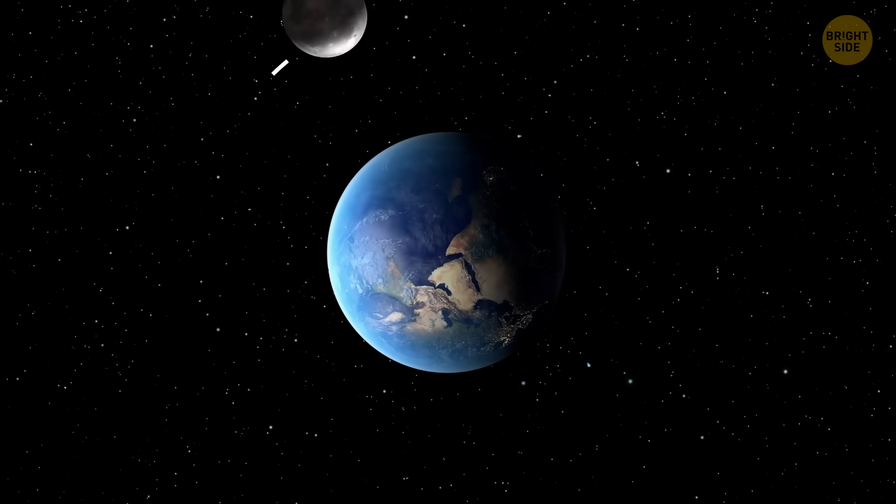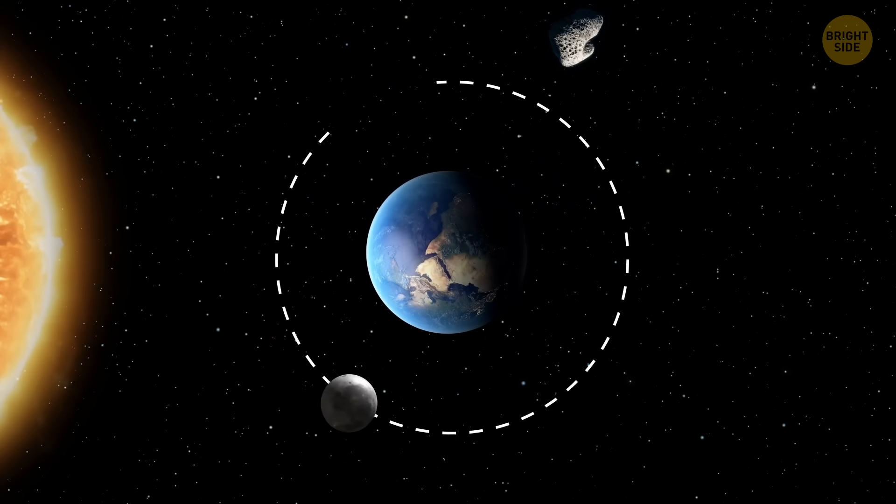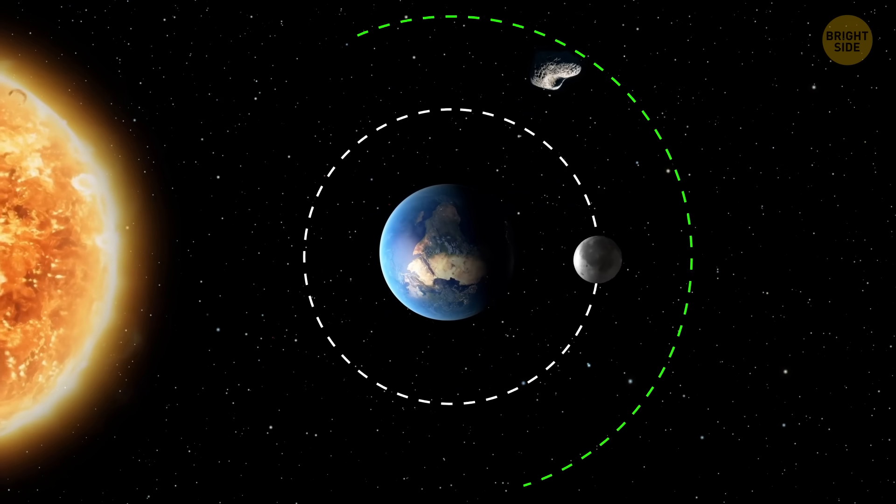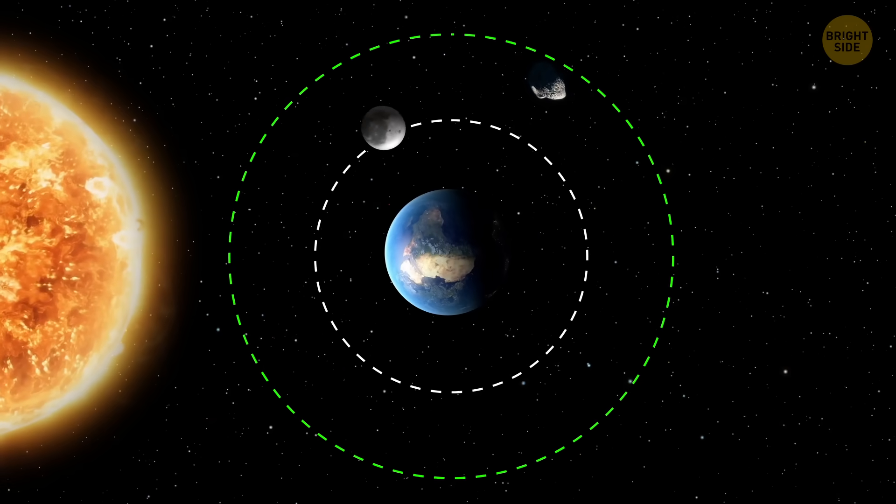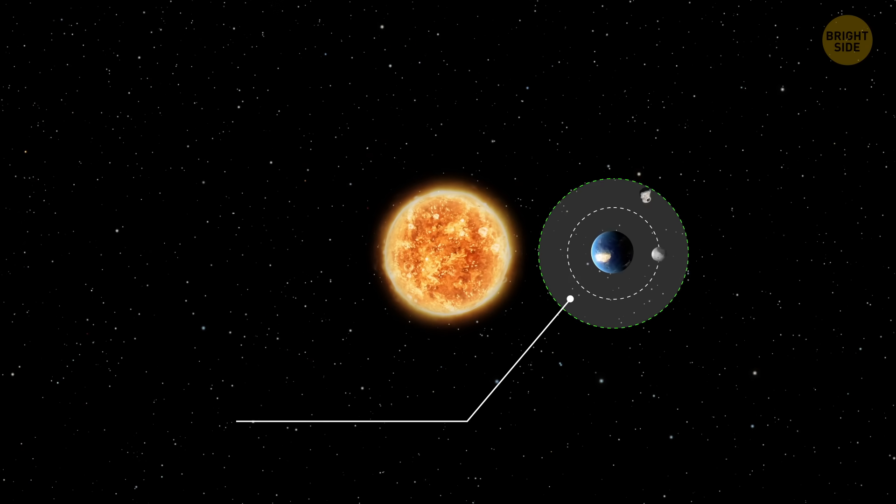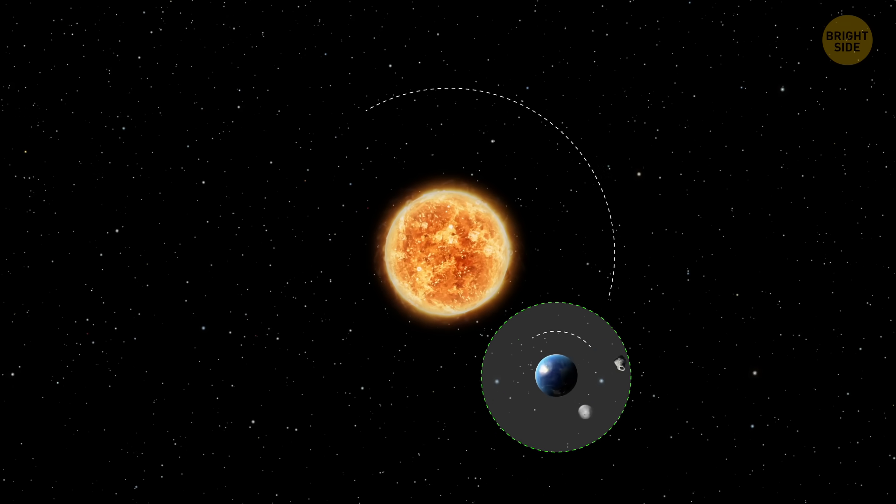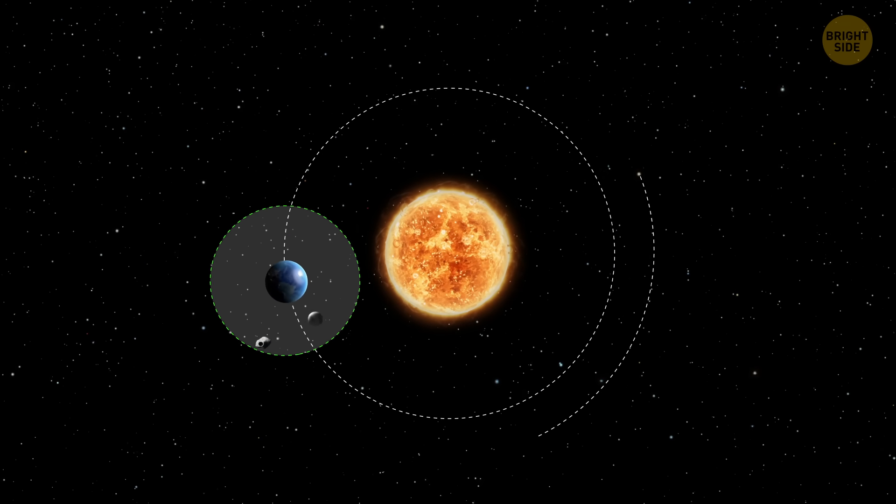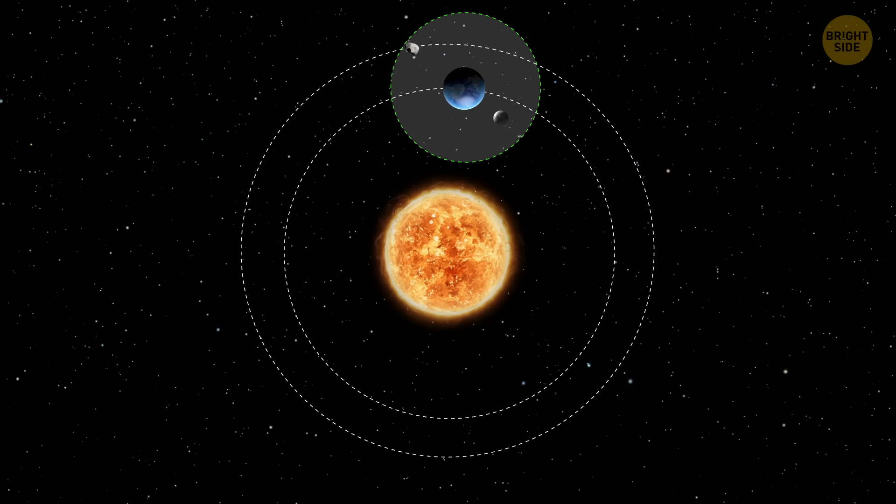That pull exists within an area called the Hill Sphere, which is where Earth's gravity is stronger than the Sun's. Think of Earth's gravity as a bubble with a radius of about a million miles. Anything inside can get caught, like the real moon. Step outside, and the Sun takes over.